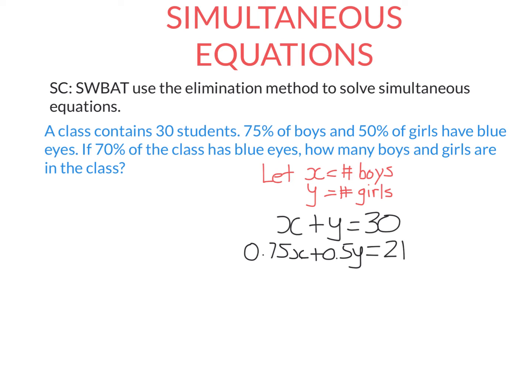Which variable do you eliminate? You eliminate the variable that has the same coefficient in both equations. In this set of equations, neither variable has the same coefficient, so we're going to multiply one or both of the equations so they do have the same coefficient.